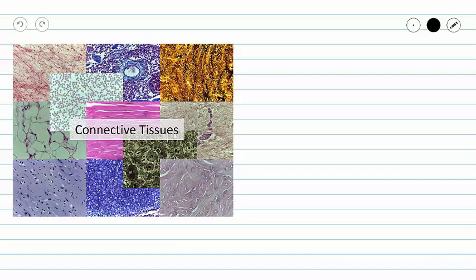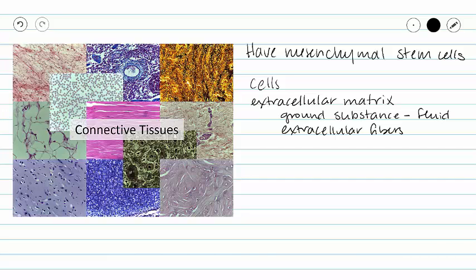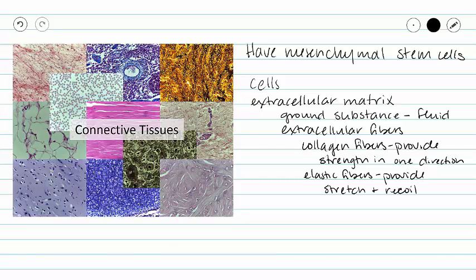All of our connective tissues are going to have a mesenchymal origin, which means that they have mesenchymal stem cells. All of our connective tissues have two major components: cells and extracellular matrix. Our extracellular matrix can be divided into two major categories. Our ground substance is the fluid component, and our extracellular fibers, of which we have three different kinds. Our collagen fibers provide strength in one direction, our elastic fibers provide stretch and recoil, and our reticular fibers create a branching framework that provides strength in many directions.